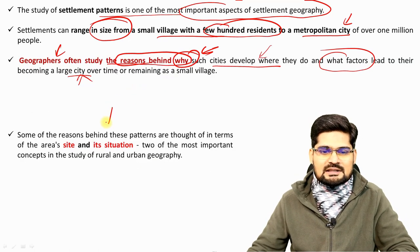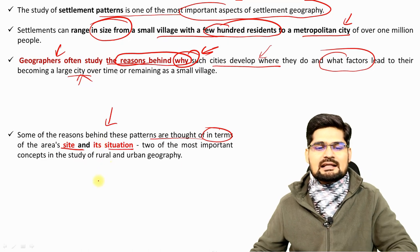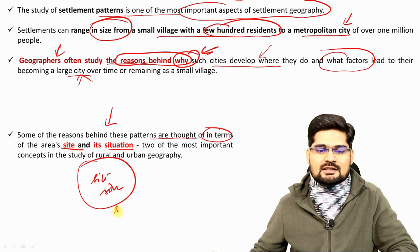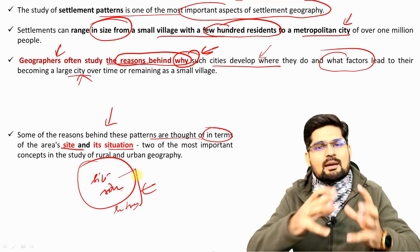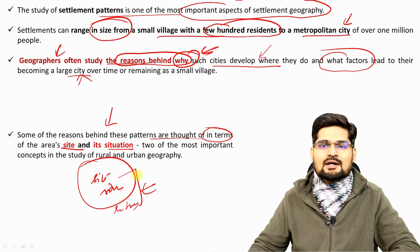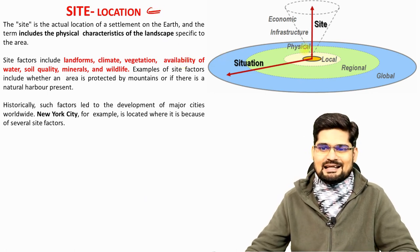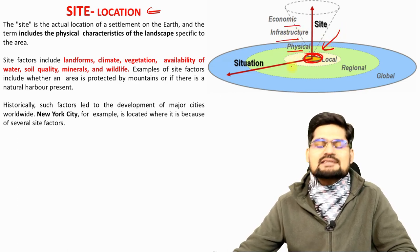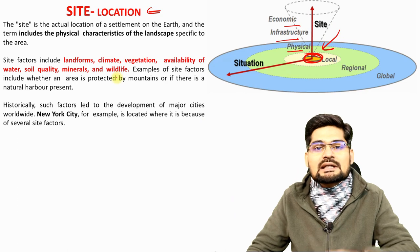Some reasons behind these patterns are thought of in terms like site and situation. Let's understand these words alongside the settlement hierarchy. First, let's understand site and location. Location is the prime location where physical, infrastructure and economic factors are all combined together. Why is a particular settlement located at that particular place?